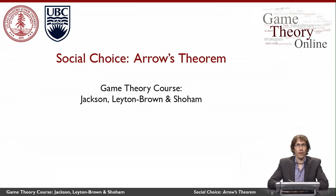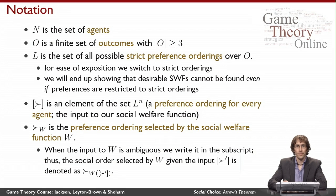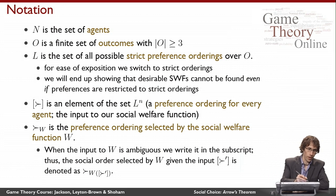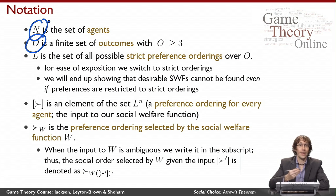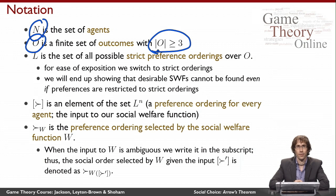In this video, we're going to look at Arrow's theorem and prove it formally. To begin, let's establish the notation we'll use throughout this video. I'll let n be the set of agents, and I'll let o be a finite set of outcomes — the candidates that the agents will have preferences over. The important thing about o is that there are at least three candidates. Arrow's theorem requires that we have at least three candidates we're voting over.